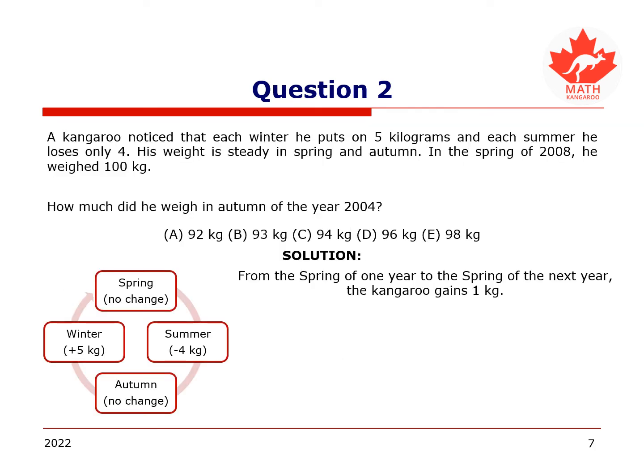Here is the solution. The pattern of the weight changes suggests that from the spring of one year to the spring of the next year, the kangaroo gains 1 kg. It means that if in the spring of 2008 the kangaroo was 100 kg, then in the spring of 2004, exactly 4 years earlier, he was 100 minus 4 equals 96 kg.